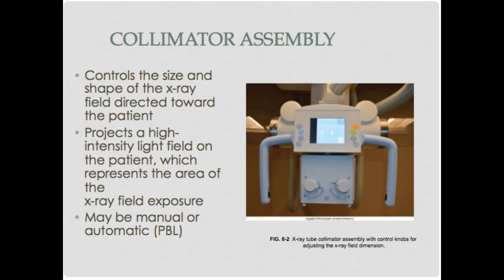There may be manual knobs to control the collimator, or an automatic positive beam limitation (PBL) option. You'll usually see a key for PBL on the equipment — when you return the key, whatever size cassette is in the Bucky tray, it will sense that and open up to that field size. You can collimate smaller but not bigger. PBL used to be required by law, but that requirement has since been removed.